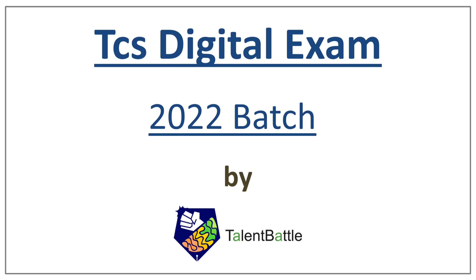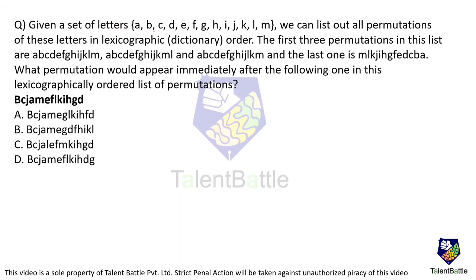So without any further ado, we will start. Given a set of letters A, B, C, D, E, F, G, H, I, J, K, L, M, we can list out all the permutations of these letters in lexicographic order. The first three permutations in this list — they gave us the first three permutations.